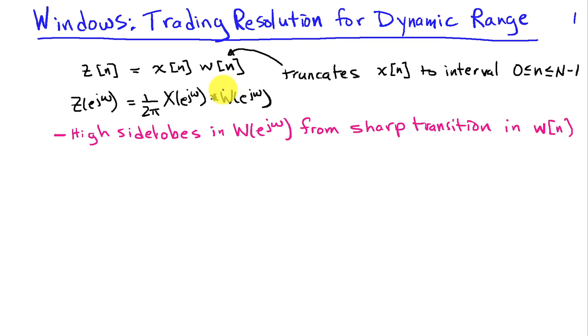Where W is the discrete-time Fourier transform of W sub n. And what we've seen with the rectangular window, or the window that multiplies all the samples of X of n that we're going to keep by 1 and the remainder by 0, is that we have these high side lobes.